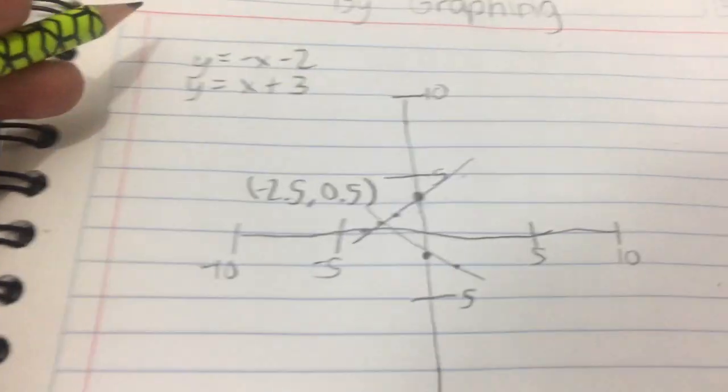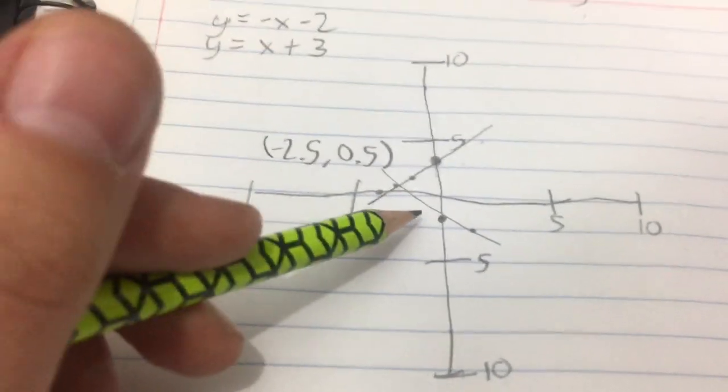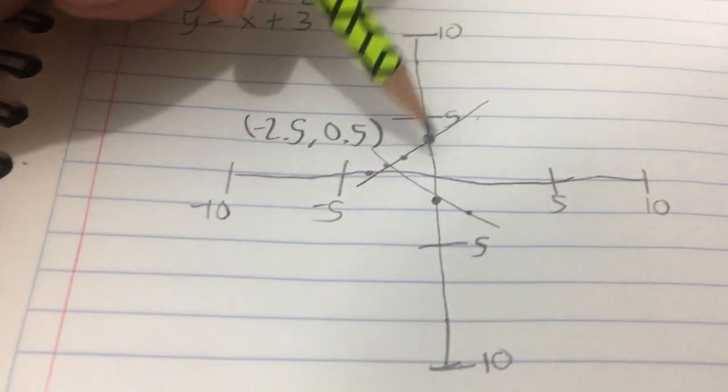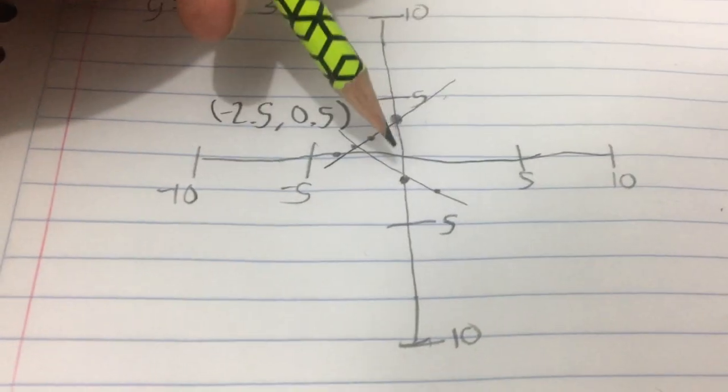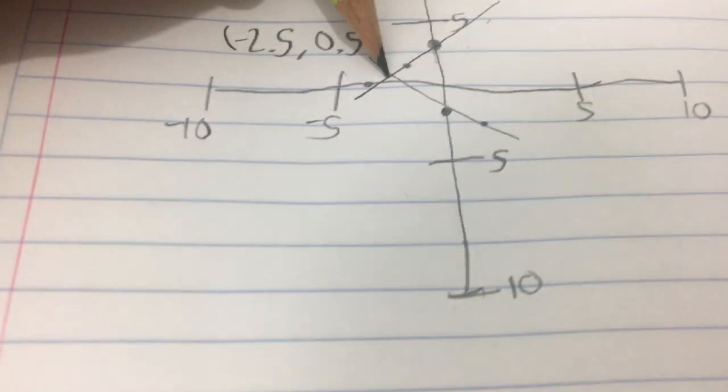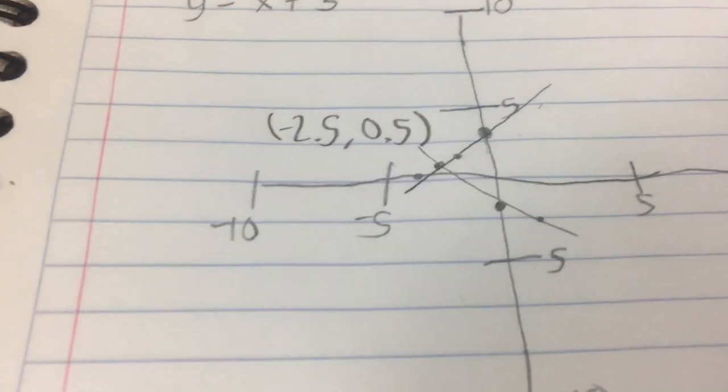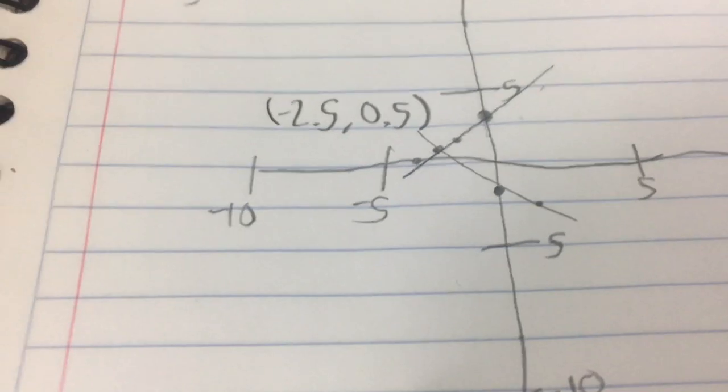Now we do the same thing here with y equals negative x minus 2. We would plot the point, which is 0, negative 2. And then we would go either down 1, right 1, or up 1, left 1. Either way, we would still end up with the same intersecting point right here, which is approximately negative 2.5, 0.5.